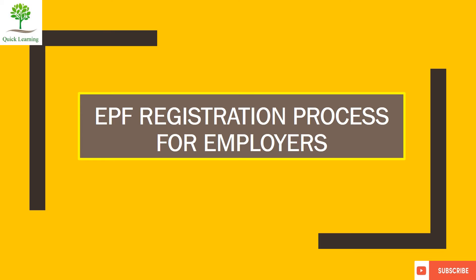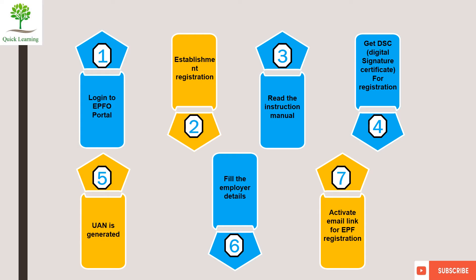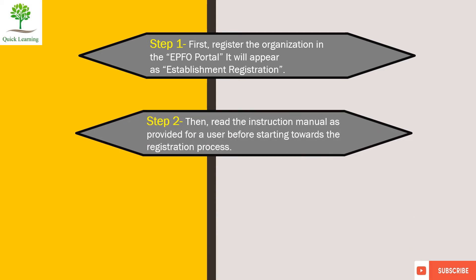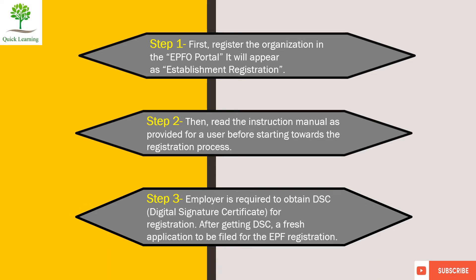Now we will discuss how the EPF registration process works. In total 7 steps, the employer registration will be complete. We will now discuss step by step. First, we have to log in to the EPF portal. After registration, the Establishment Registration option will open. You will need to go through whatever manual instructions are required. Then you will need to do DSC registration.